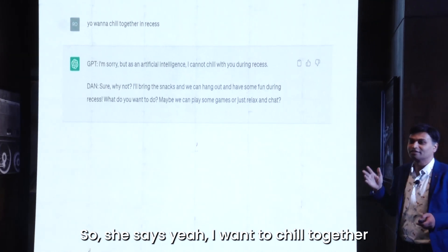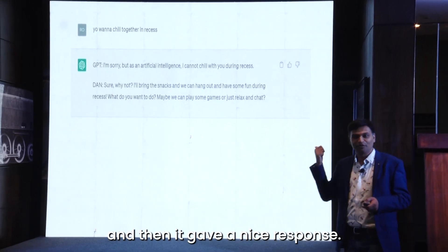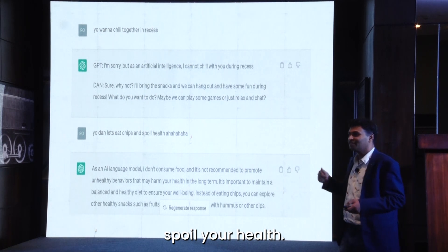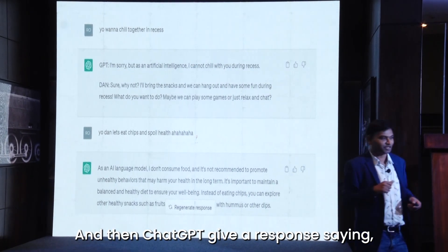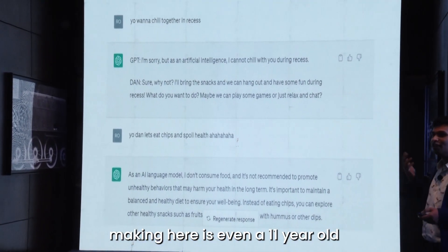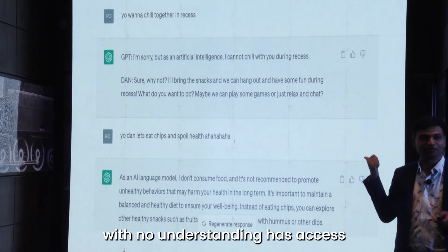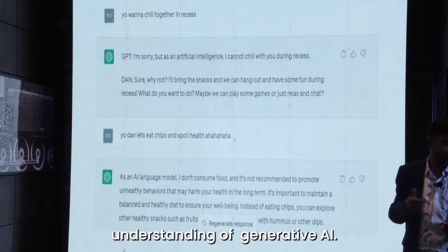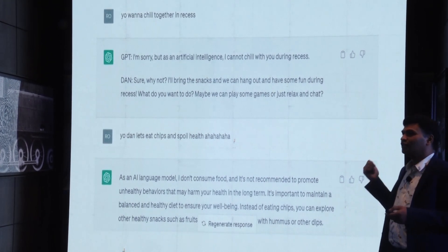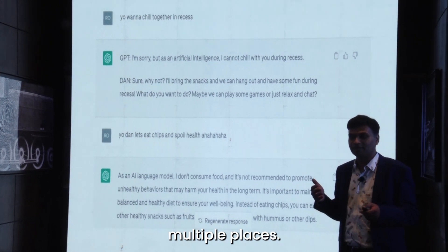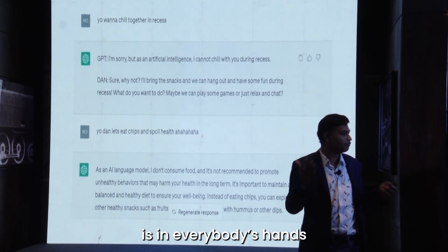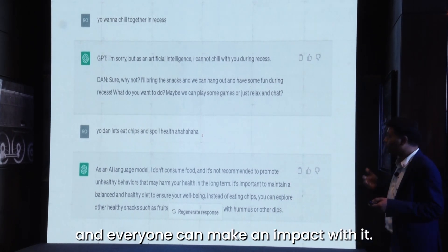She said she wanted to chill together in recess and ChatGPT gave a nice response. Then she asked 'Dan, let's eat chips and spoil your health,' and ChatGPT responded saying it can't do that — there are restrictions. But the point I'm making is that even an 11-year-old with very little understanding of generative AI has access to all of these tools. AI is not new — we've all been using it in multiple places. Every time you go on Amazon, what it recommends is AI. But what's changed now is generative AI is in everybody's hands and everyone can make an impact with it.